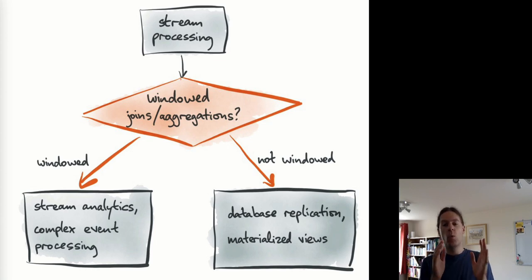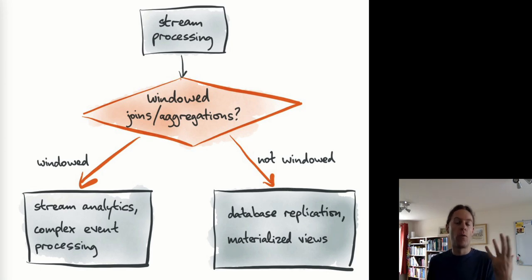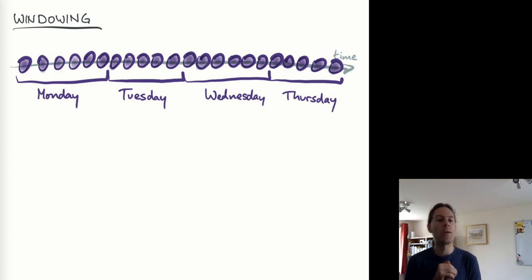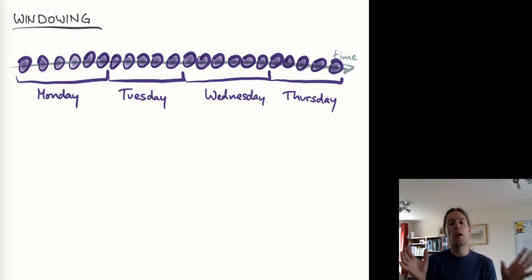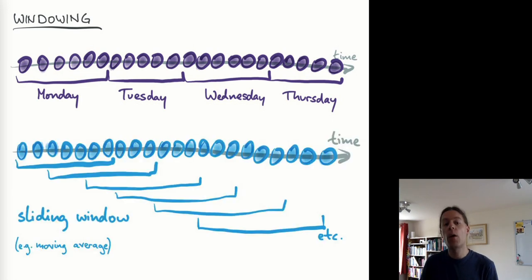Windowing means we group together events that occur within some time period of each other. This is very often used for analytics over stream-based data, or complex event processing — combining several events to spot patterns and generate derived events. A simple example: group together all events that occurred on a certain day, week, or month, perhaps calculating the sum of some value per day. You take all events within some time period and treat them as one unit, with each time period separate from others. That's one way of windowing.